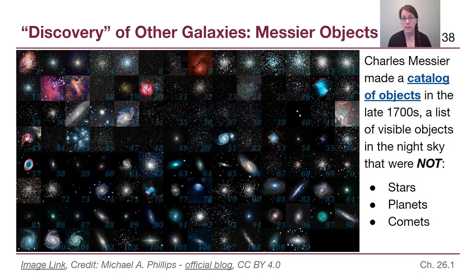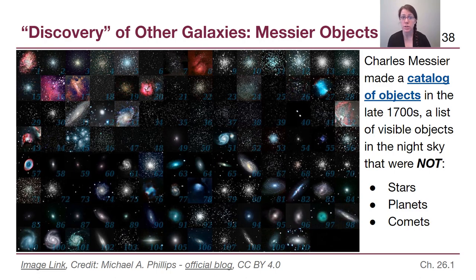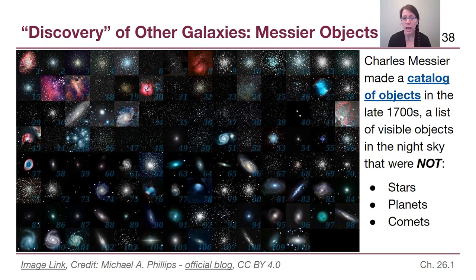Looking at this set of 110 different objects, we see that most of them are star clusters. We have several dozen open clusters of dozens or hundreds of stars, and several dozen globular clusters — big collections of hundreds of thousands of stars. Then there is a handful of nebulae and galaxies. About a third to a half of these are galaxies, and we know that they are galaxies just from our 21st-century knowledge of that spiral structure we saw in the previous slides for chapter 25.